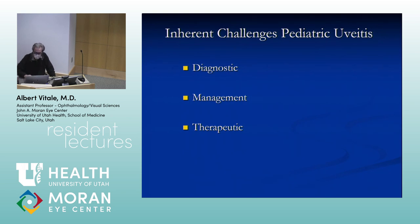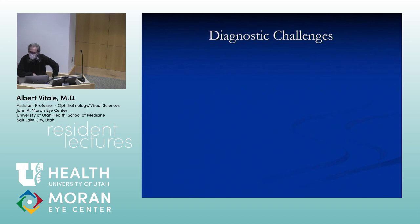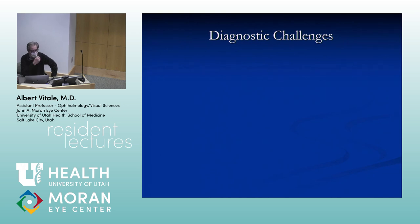From your reading, what are some of the diagnostic challenges we face in pediatric uveitis? They won't tell you their symptoms — they may not have symptoms. Amblyopia is a concern. Classic treatments like steroids have a lot of side effects. What about their diagnosis and the representation of diseases?